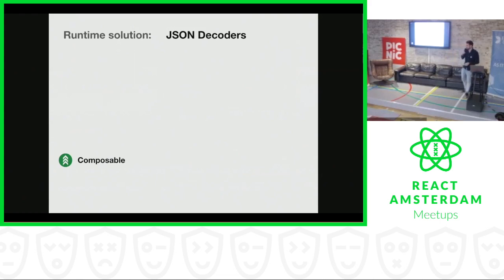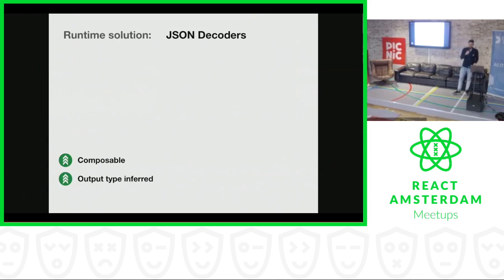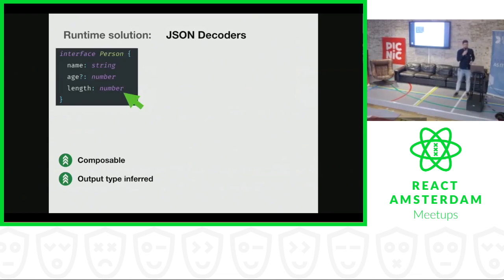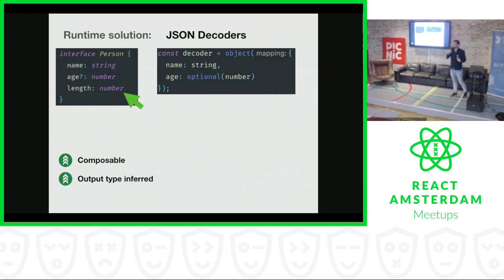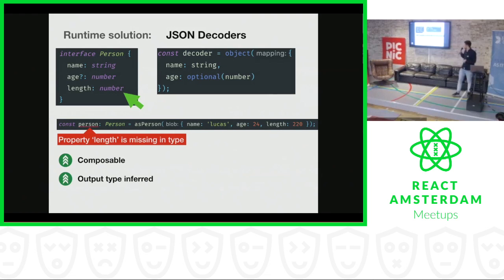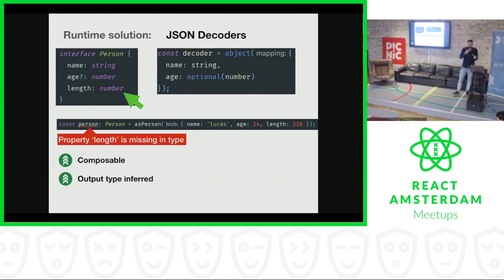The positives about JSON decoders: they are composable, and output types are inferred from the function. So to give you an example — if I add another property called 'length' to the person interface, but I forget to add it to the decoder, and I later try to decode JSON and catch the return value in a variable, it will actually notify me that this is never going to work because property 'length' is missing in your decoder.